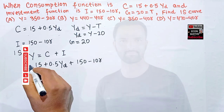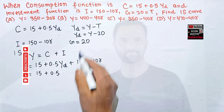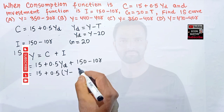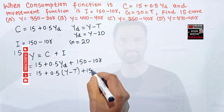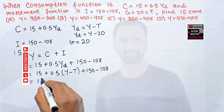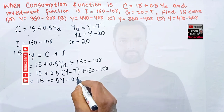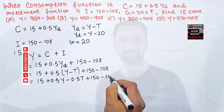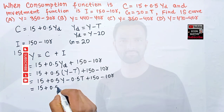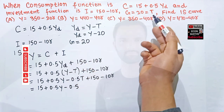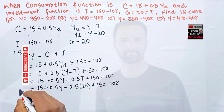Replacing Y_d with Y - T, which is Y - 20, we expand: Y = 15 + 0.5(Y - 20) + 150 - 10r. Distributing the 0.5 gives us Y = 15 + 0.5Y - 0.5(20) + 150 - 10r, and since 0.5 × 20 = 10, we get Y = 15 + 0.5Y - 10 + 150 - 10r. Adding government expenditure G = 20 to the right-hand side as well.